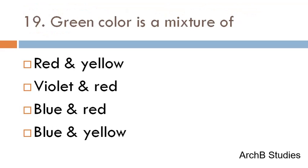Green colour is a mixture of — red and yellow, violet and red, blue and red, or blue and yellow? The correct answer is blue and yellow.